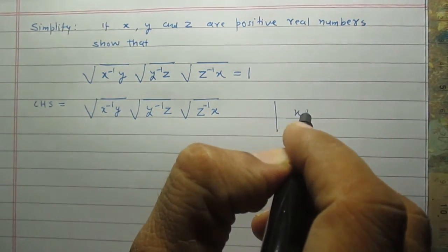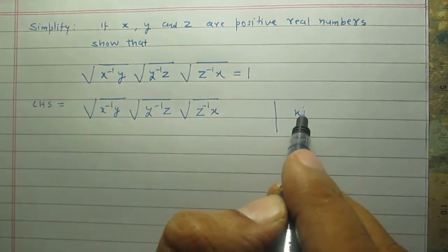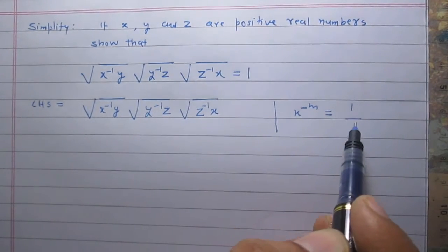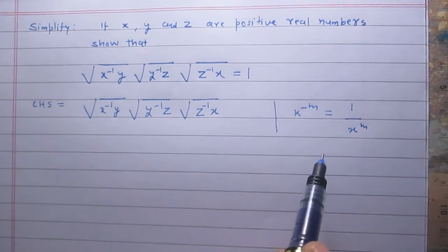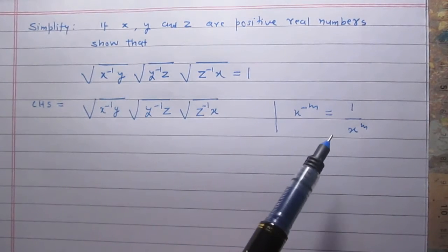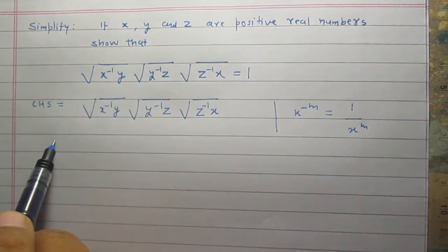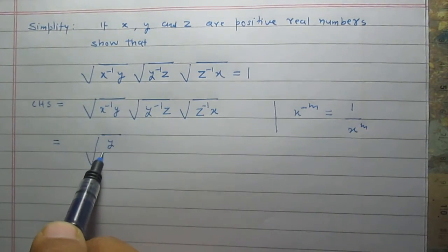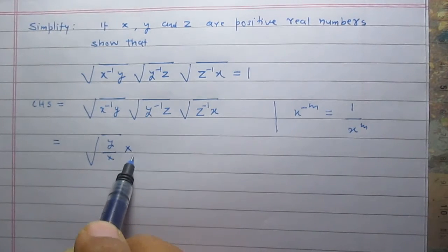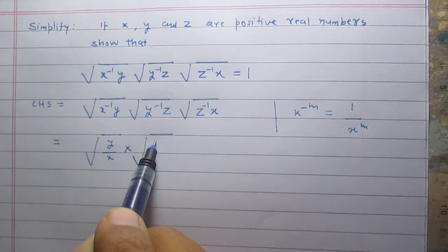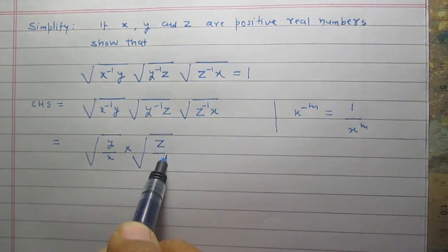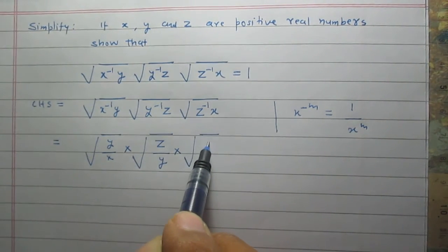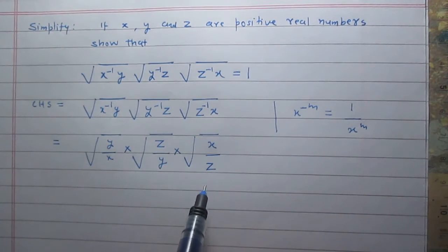With square root, we know that x raised to the power minus m is equal to 1 upon x raised to the power m. So using this relation we can write the left hand side as square root of y upon x in multiplication with square root of z upon y, and then multiplied by square root of x divided by z.